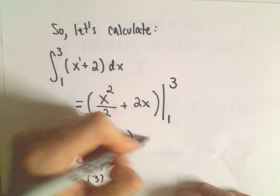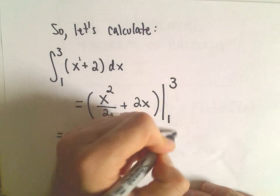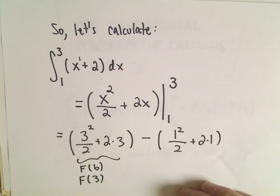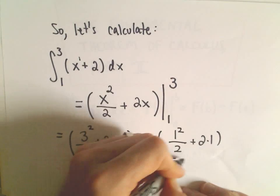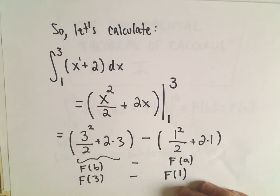And then what we do is we subtract away. So now everywhere there's an x, I simply plug in 1. So we would have 1 squared over 2 plus 2 times 1. So here we're subtracting away our f of a, which in this case is just f of 1.